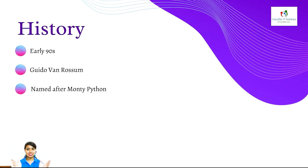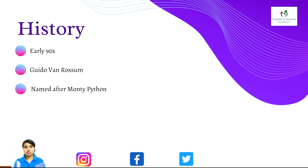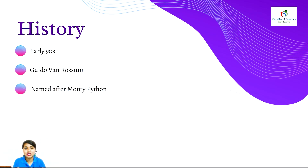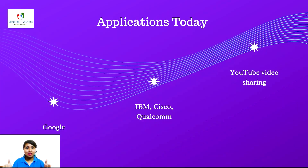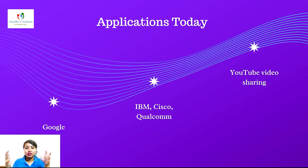Any topic obviously has a history. Python was developed in the early 1989–1990s. The father of Python is Guido van Rossum, and he named it after the famous show Monty Python. Let's not dig deep into that. The main companies using Python recently include Google, IBM, Cisco, Qualcomm, and YouTube — the way we share videos on YouTube is based on Python.